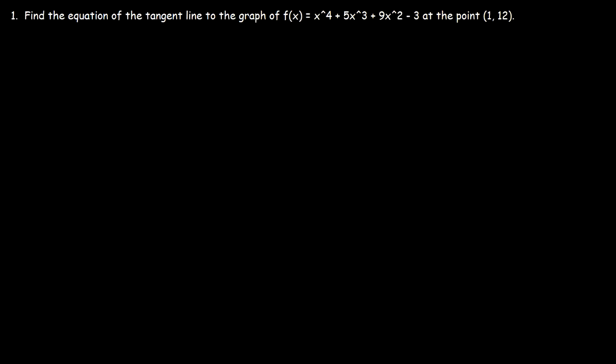In this video, we're going to talk about how to find the equation of a tangent line. Let's go over some basic information. What is a tangent line? If we have a curve, the tangent line is a line that touches the curve at exactly one point.